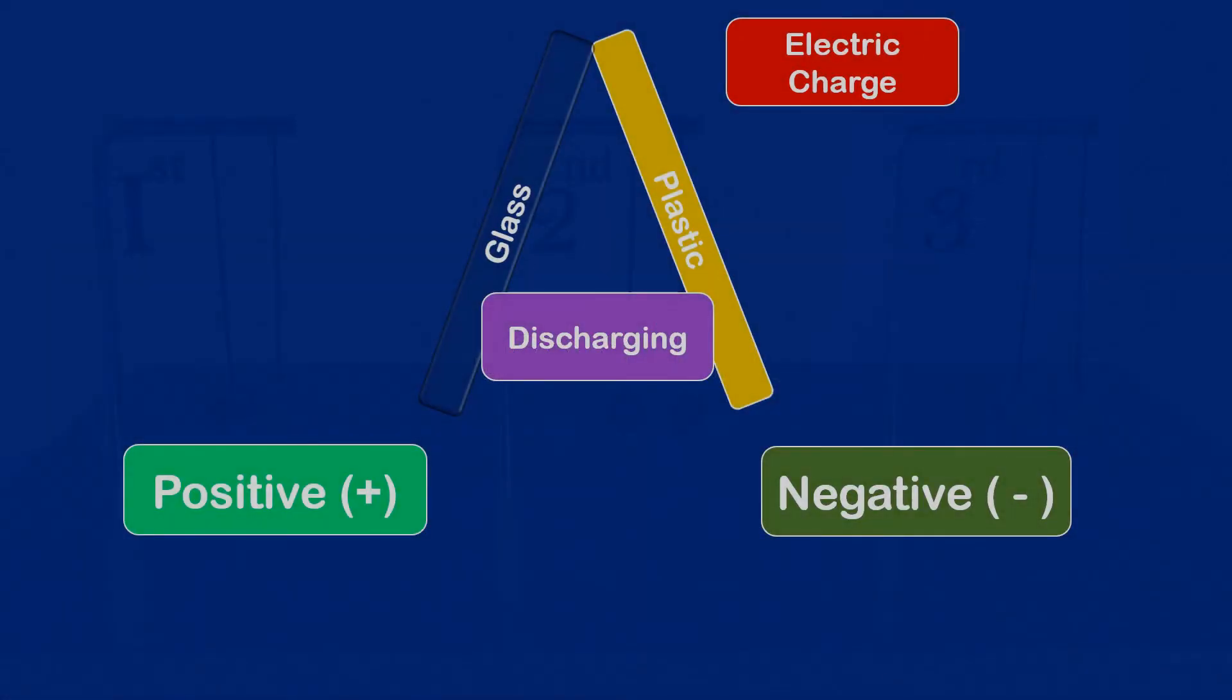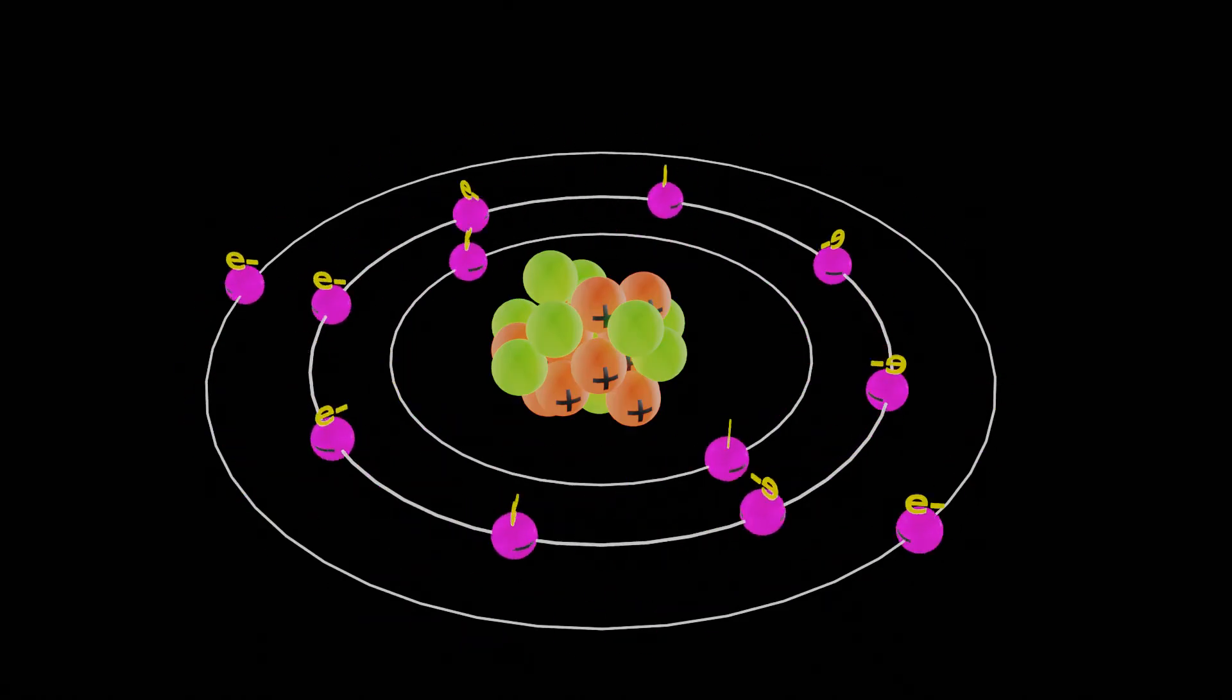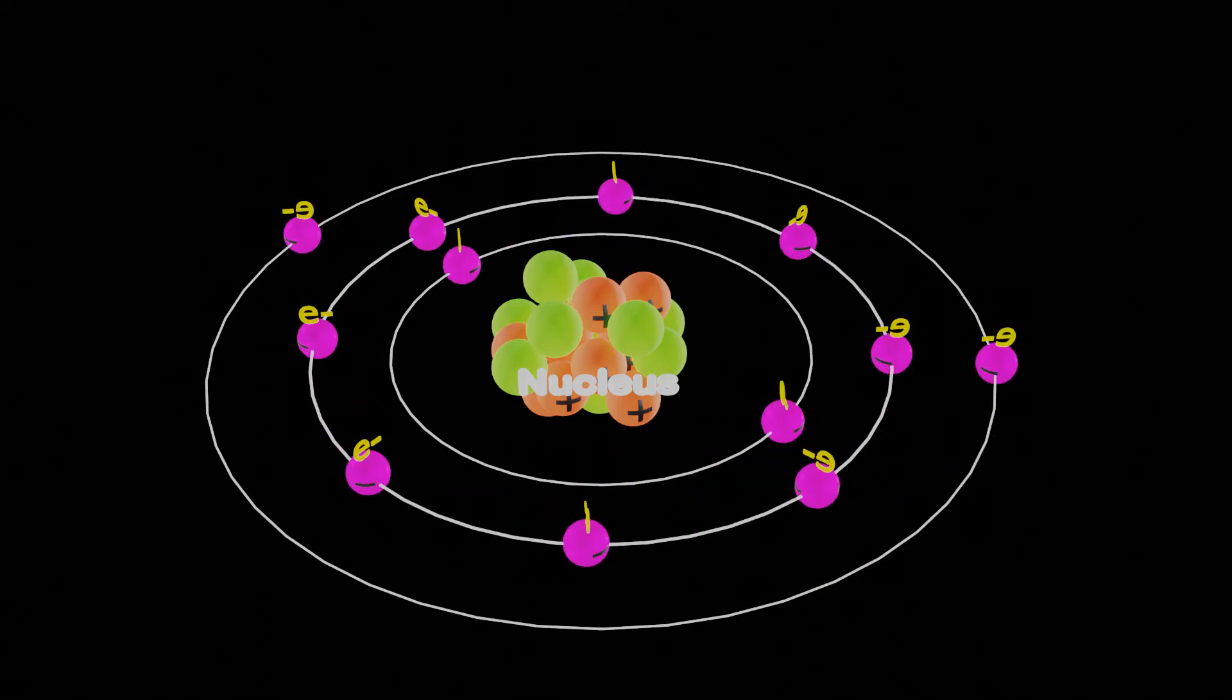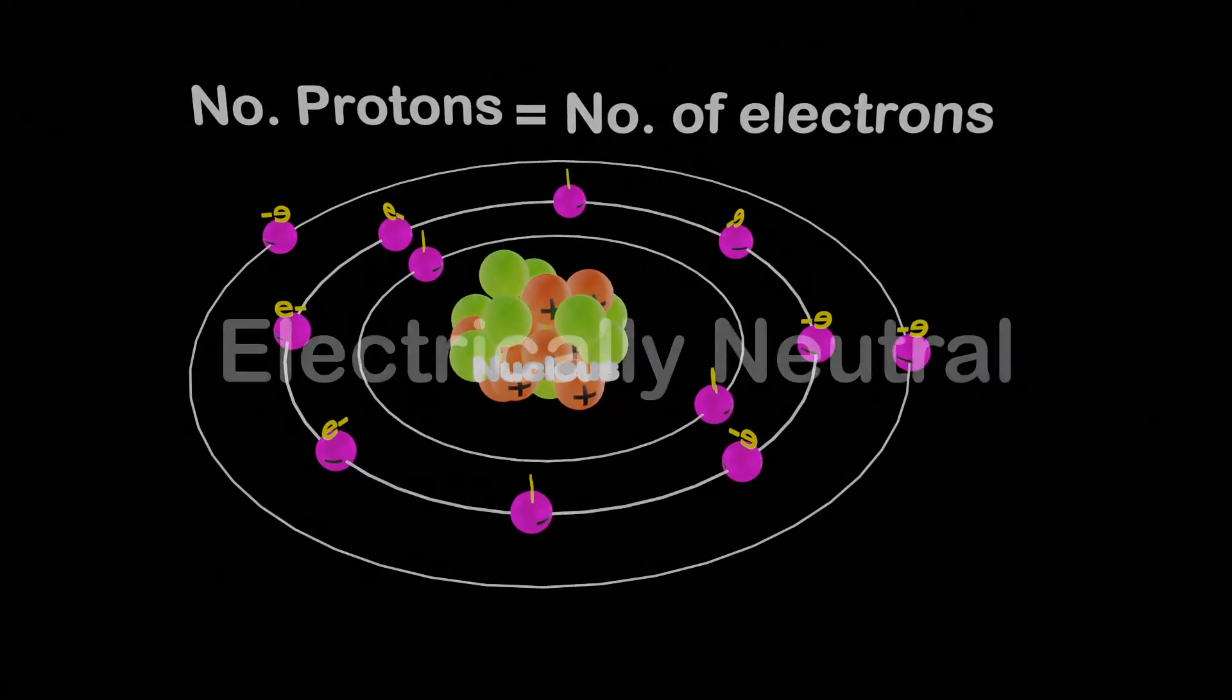As we know, everything in this universe is made of atoms. And an atom is made up of protons, neutrons and electrons, where the protons and neutrons are held together in the nucleus with the help of strong nuclear force. Protons are positively charged particles, while neutrons are neutral. An atom has an equal number of positively charged particle protons and negatively charged particle electrons, because of which atom is electrically neutral.